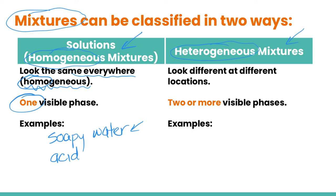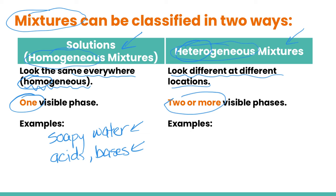Other good examples of homogeneous mixtures are acids, which are always diluted in water — a mixture of the acid and water — and the same goes for bases. Both of these always appear to have one visible phase. On the other side, 'hetero' means more than one, so heterogeneous mixtures look different at different locations and have two or more visible phases, where you can distinctly see differences. Salt and pepper is a great example — you see the white bits of salt and the black bits of pepper not mixing together.